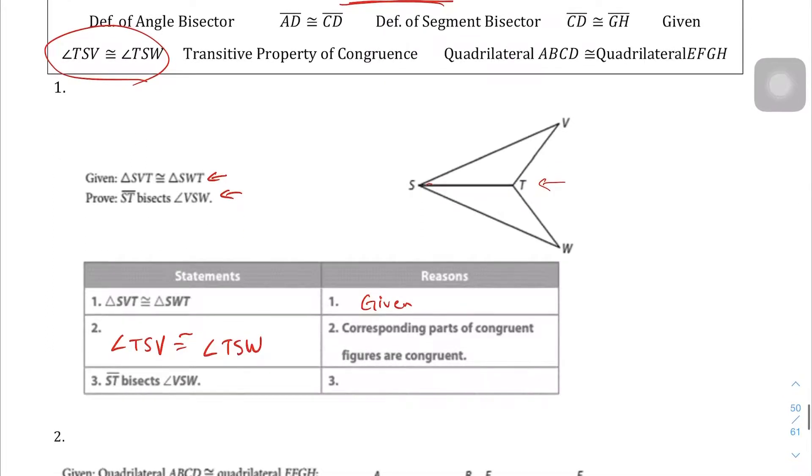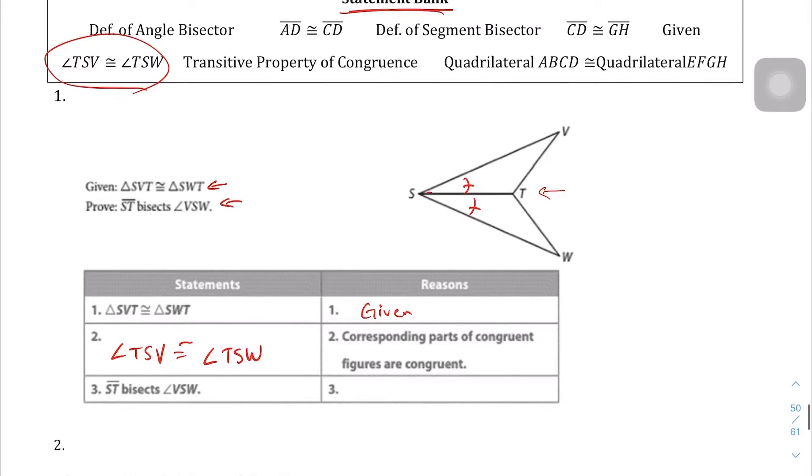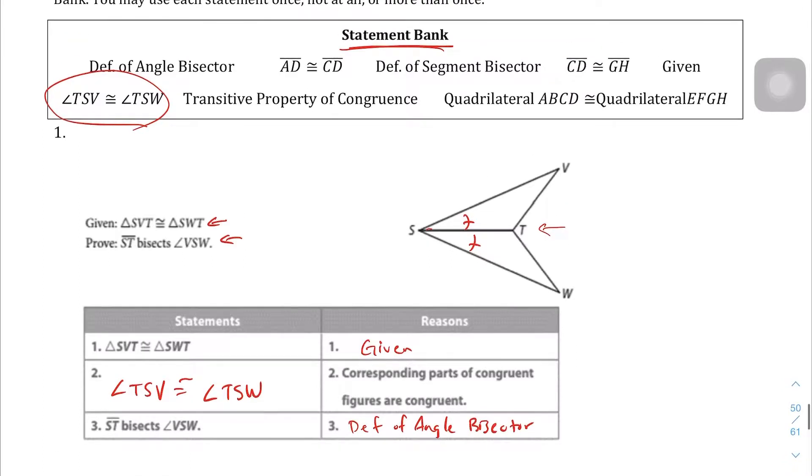And, lastly, for statement number 3, ST bisecting VSW. Well, that's just the definition of an angle bisector. If we know that this angle is congruent to this angle already, and ST is basically in the middle of them, well, that's the definition of an angle bisector. Def of angle bisector. And that was given right up here. It's one of the first statements in there.